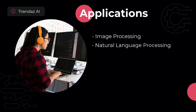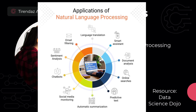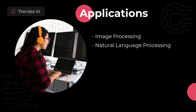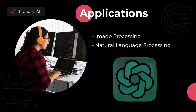Another area where deep learning is used a lot is NLP. For example, you can use deep learning in projects such as translation, text classification, text generation, and sentiment analysis. The most popular application of deep learning in NLP recently is ChatGPT. This chatbot showed everyone what AI tools can do.